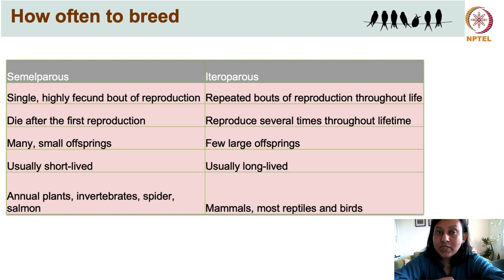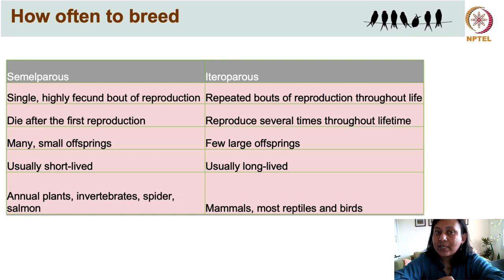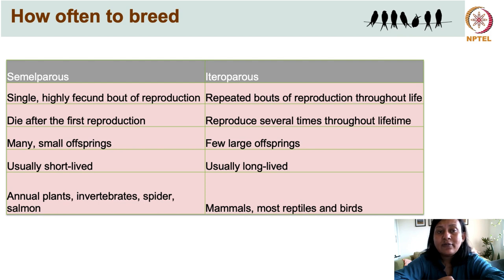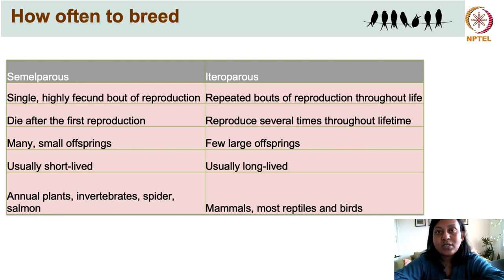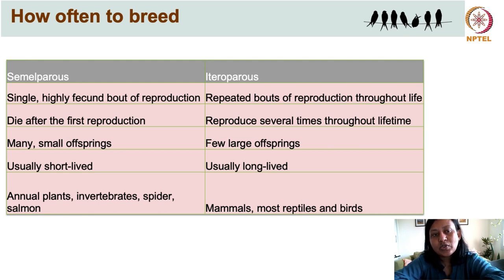Another decision adults must make is how often to breed during their lifetime — their parity — and based on that, there are two broad categories. The first are semelparous organisms, which have a single highly fecund bout of reproduction, meaning they reproduce just once and produce numerous offspring in that one bout. Their investment in reproduction is so high that there is nothing left for the adult to survive afterward.